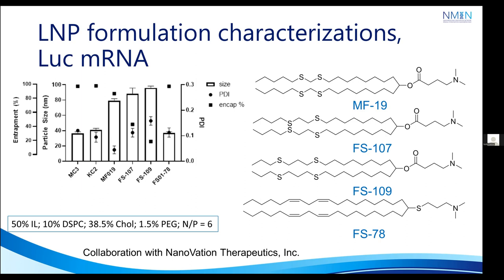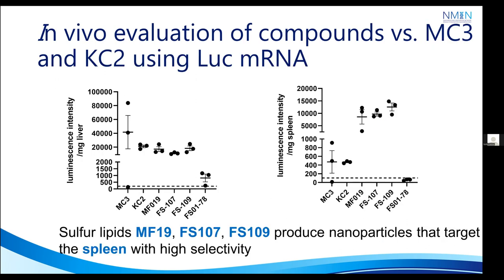Having the LNPs in hand, in vivo evaluation of compounds versus MC3 and KC2 using luciferase mRNA was investigated. We observed comparable expression in the liver to KC2 and superior expression in the spleen. Sulfur lipids like MF19, FS107, and FS109 produced nanoparticles that targeted the spleen with high selectivity. FS78, with the sulfur atom on the head part and the same tail as MC3, was completely inefficacious.